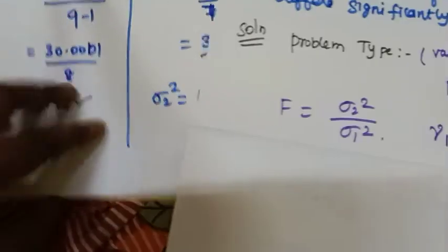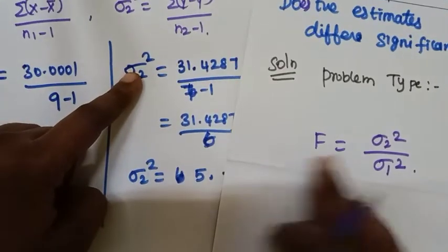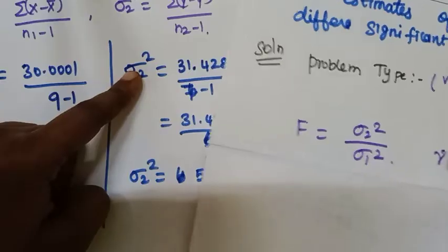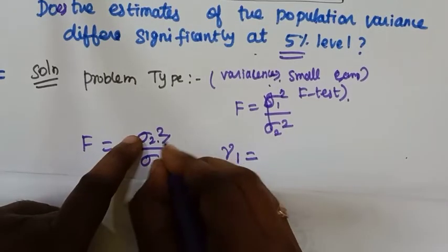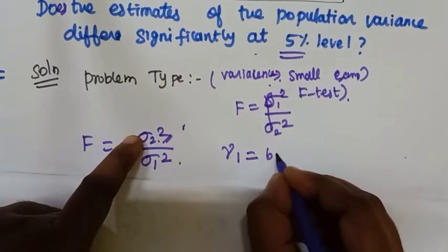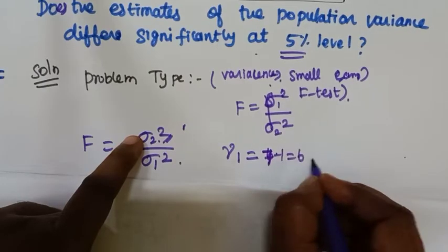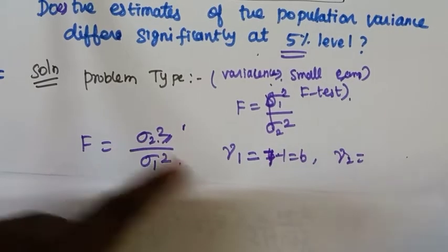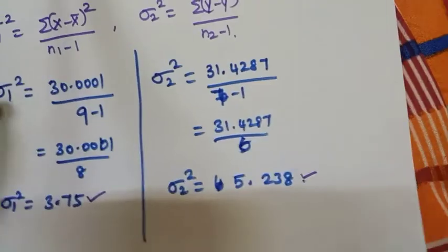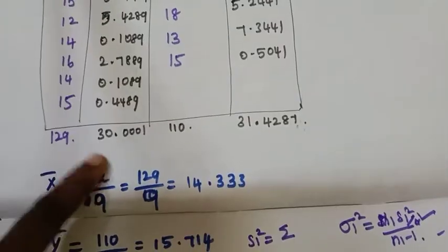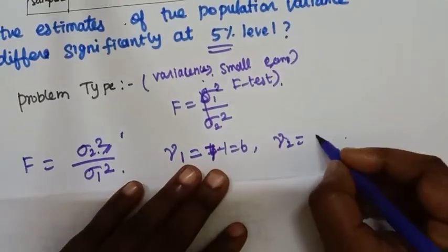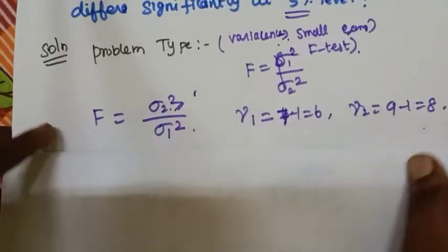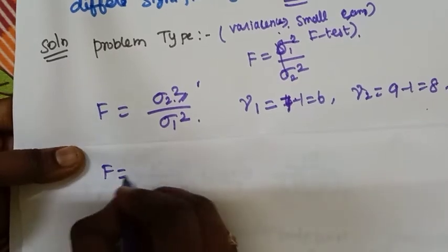So now we have degrees of freedom. First degrees of freedom and second degrees of freedom. The second sample size equals 9, so degrees of freedom equals 8. Then we click on this way into the table.